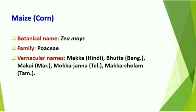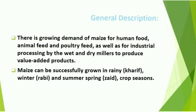The third main cereal is maize, also called corn or Zea mays. It also belongs to the family Poaceae and has many vernacular names as per local languages. There is very high demand for maize since it is a major human food, also used as cattle feed and in preparation of foodstuffs like biscuits and healthcare products. It is successfully grown in rainy, winter, and summer seasons. If grown in the rainy season, it is called a kharif crop; if in winter, it is rabi; and if in summer or spring, it is called zaid.